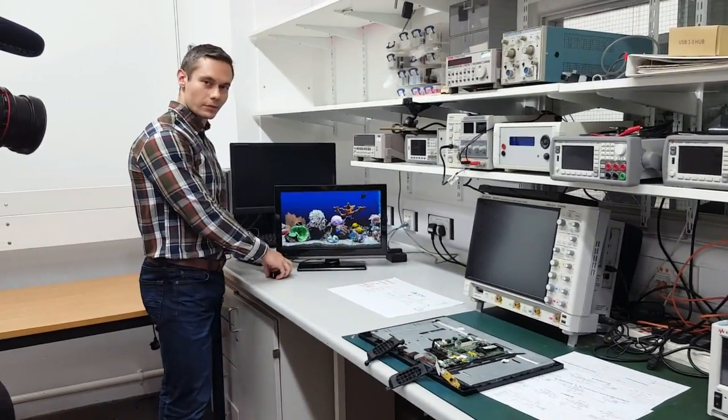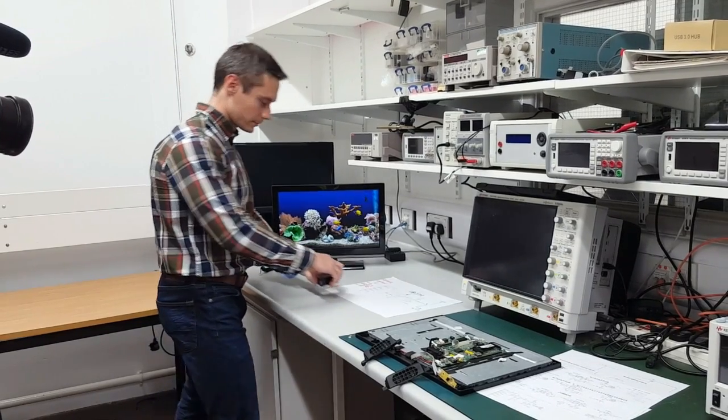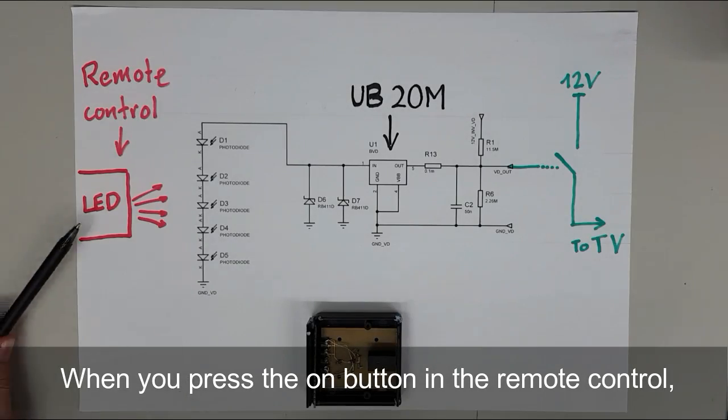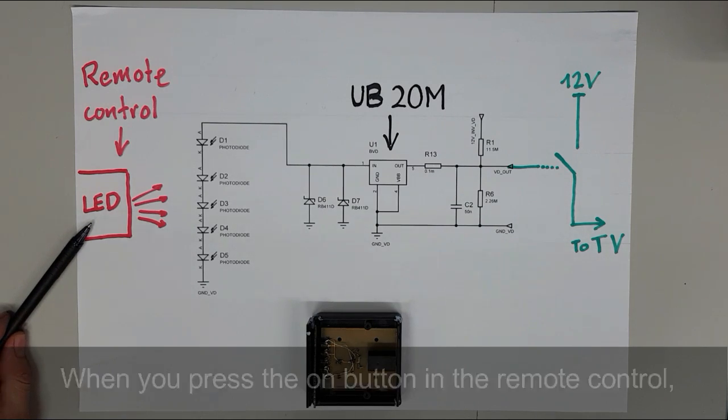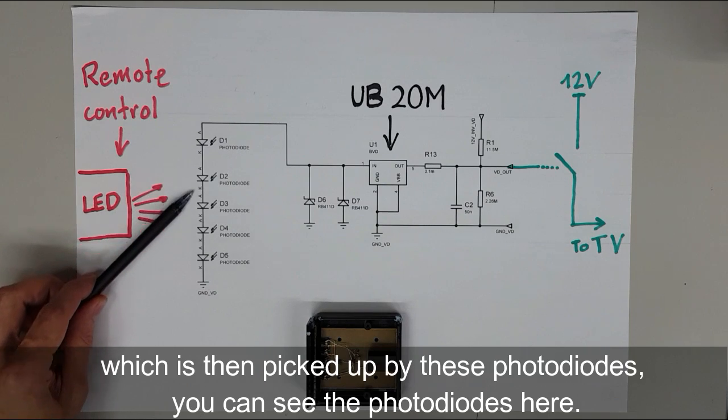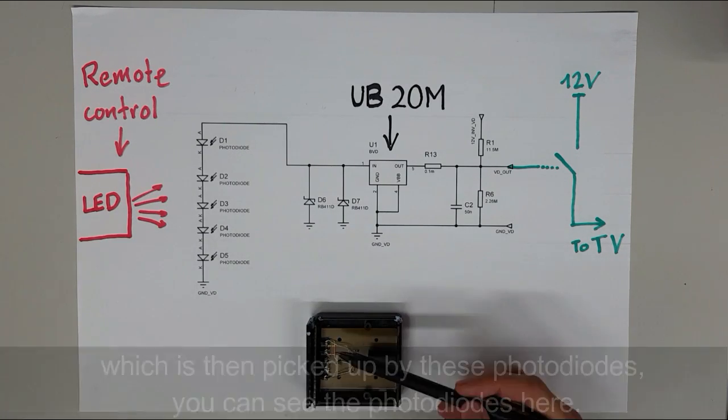I am going to show you now what is inside our receiver. When you press the on button in the remote control, the LED inside generates an infrared signal, which is then picked up by these photodiodes. You can see the photodiodes here.